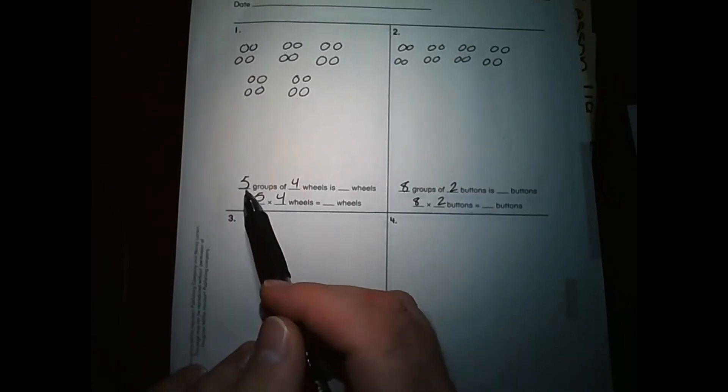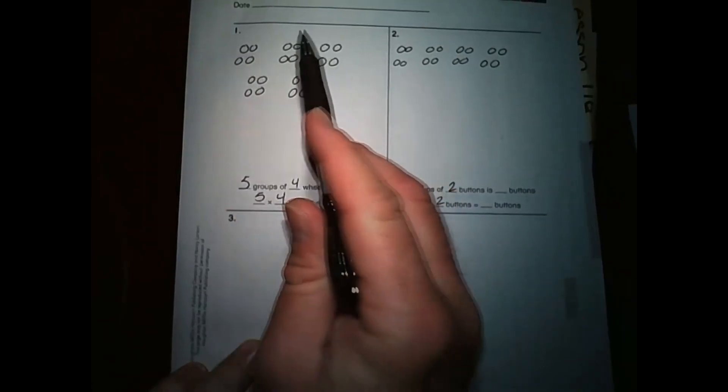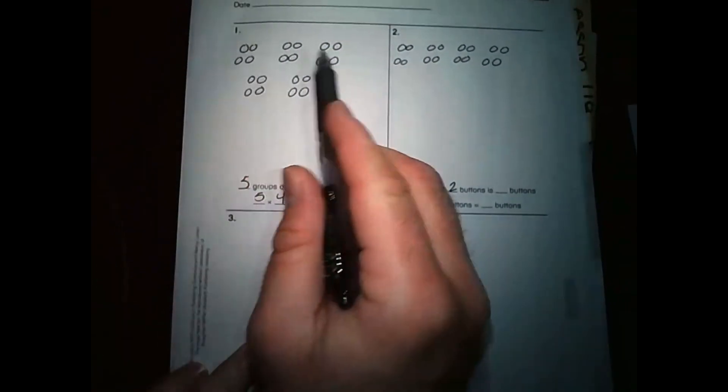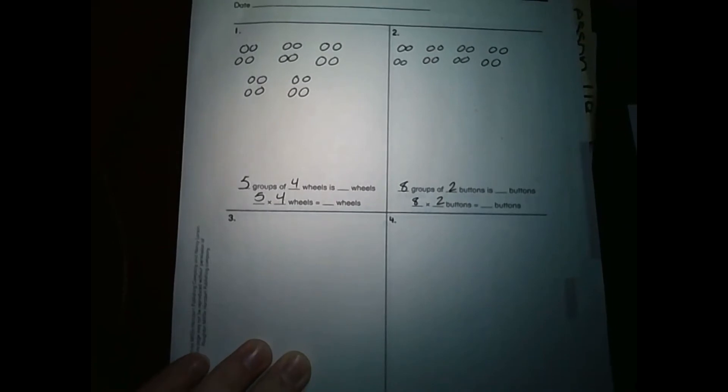So it says five groups of four wheels is blank wheels. So I've made five groups. Here's my first group, my second group, third group, fourth group, and fifth group. And in each group, I have put four wheels. One, two, three, four. So I have five groups of one, two, three, four.